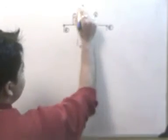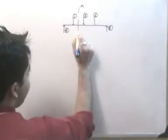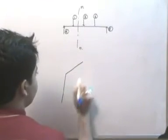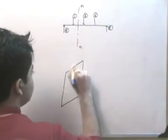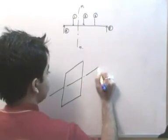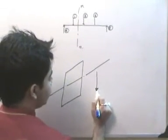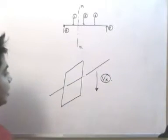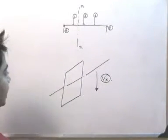Now let us cut this beam by a section Mn and let us represent this cross section here. Suppose this is my cross section and this is my neutral axis and the resultant shear force at this cross section is equal to Vx. And this Vx is the result of the shear stresses acting all over the cross section.